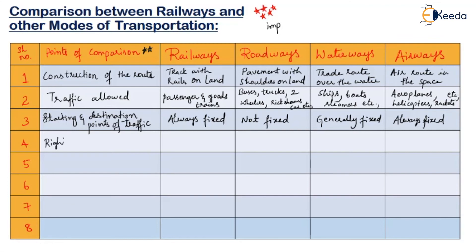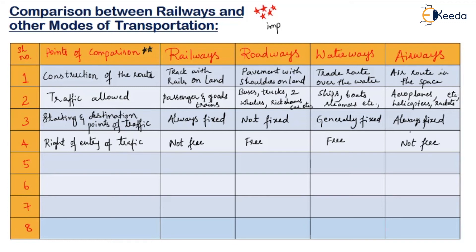The fourth point is right of entry of traffic — if you want to enter a railway track, road, waterway, or airway, what right do you have? In railways it is not free; you must use the fixed rail in the country. In roadways it is free to all categories of traffic. In waterways it is also free. In airways it is not free — you can take only particular aircraft. In roadways and waterways, there is free allowance for traffic.